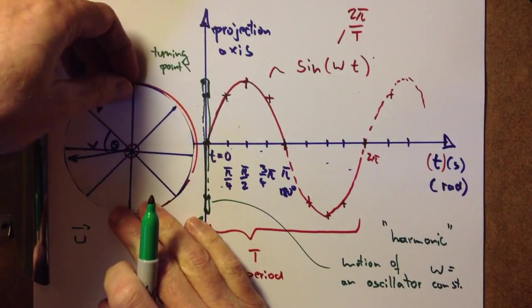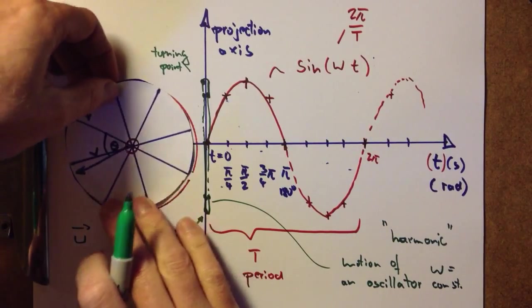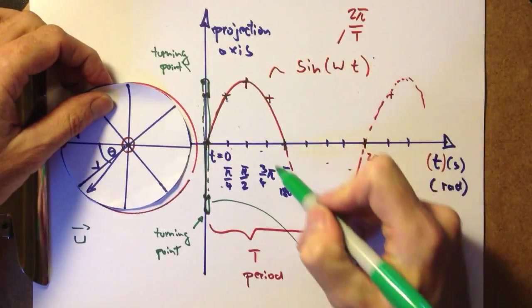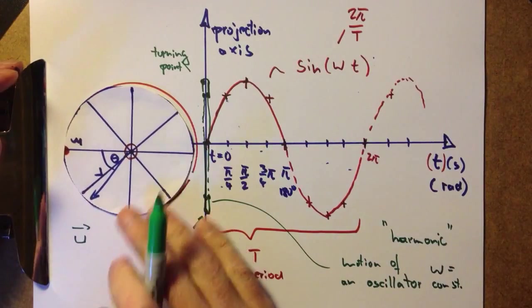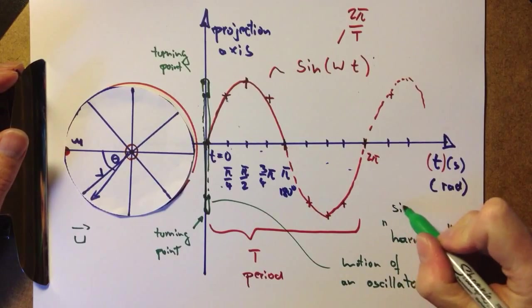If this motion, as in this case because we have a circle, follows a sine function, then we talk about simple harmonic motion.